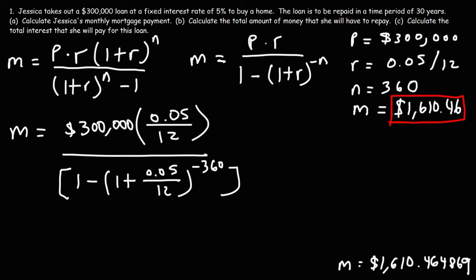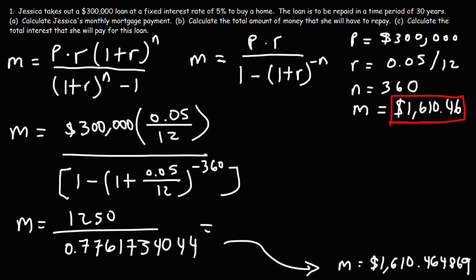So 300,000 times 0.05 divided by 12. We know that to be 1250. And then 1 minus, and then in parentheses, 1 plus 0.05 divided by 12, raised to the negative 360. That's 0.7761734044. So dividing those two numbers gives you this answer as well. So that's another way in which you can calculate the monthly mortgage payment.